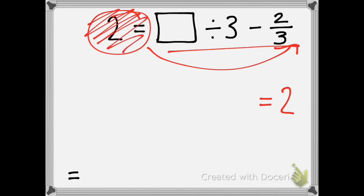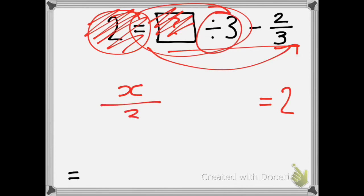Once I've done that I can scribble that out. Now this time I've got a missing number divided by 3. So instead of a missing number I'm going to use x again and then divide by 3. If you remember from the beginning of the video, to show division algebraically I put a line and then 3. So that means x divided by 3.